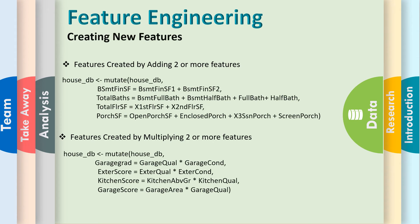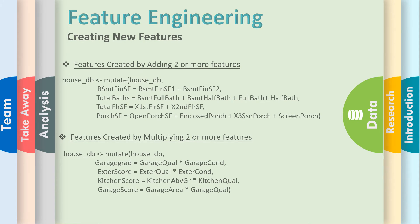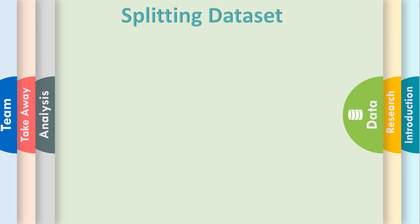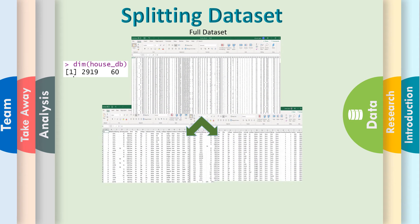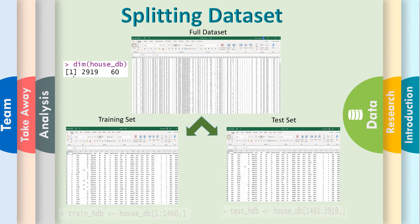Feature engineering: creating a new feature by adding two or more related features, or by multiplying two or more related features. We are splitting our dataset into test and train sets for data preparation.